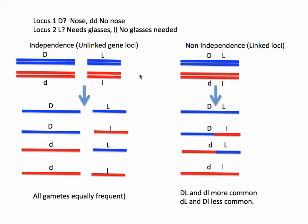On the left, I have the standard assumption of what we call complete independence. What complete independence usually means is that you have unlinked gene loci. Linkage refers to which chromosome the genes are on — whether they're on the same chromosome or different chromosomes. If you have unlinked genes, the genes related to nose presence or absence are located on one pair of homologous chromosomes, while the genes related to needing glasses are on another set of chromosomes that are not homologous to the first.